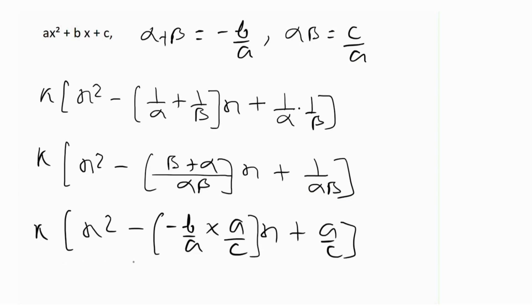Simplifying with c as the LCM, the polynomial becomes cx² + bx + a, since minus times minus gives plus. So option (c) is the answer.